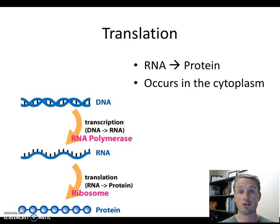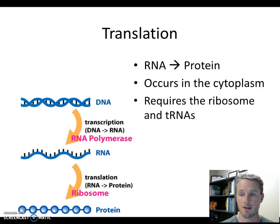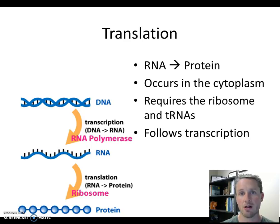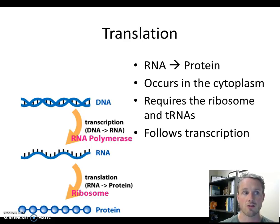Translation occurs in the cytoplasm because that's where our ribosomes are. Translation requires the ribosome to perform this function, and we're also going to talk about another molecule that is required: the tRNA. Importantly, translation must follow transcription because we need that RNA molecule — we need the information in that RNA molecule so that we can read it and construct the protein that the RNA instructs us how to build.